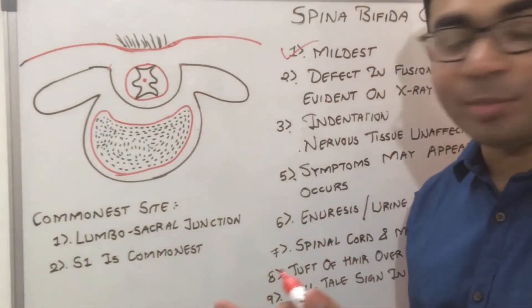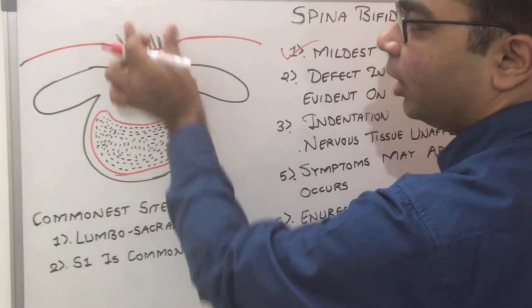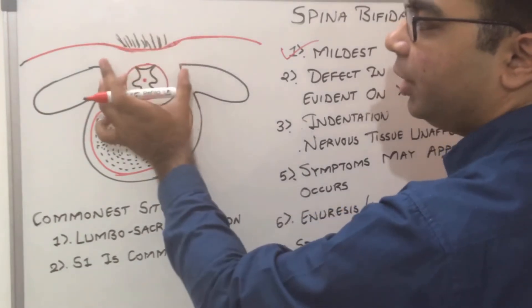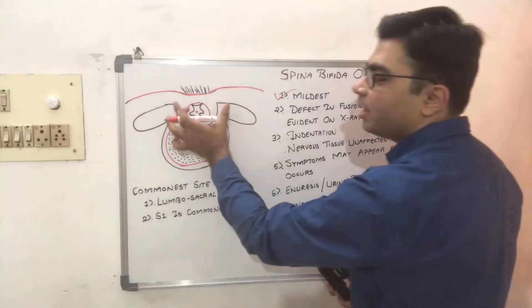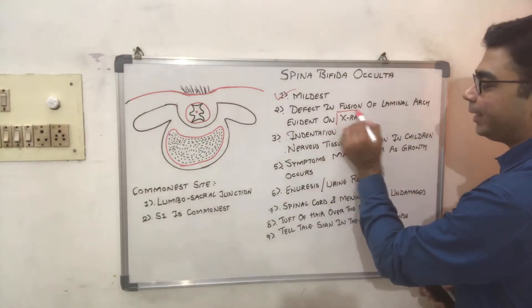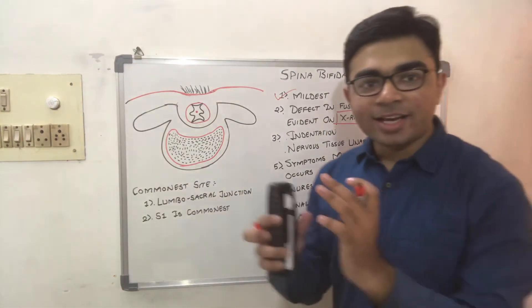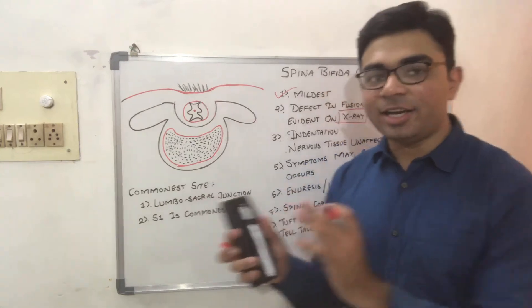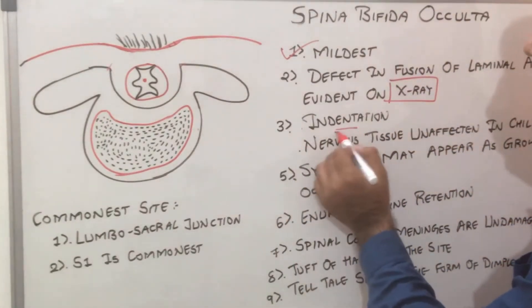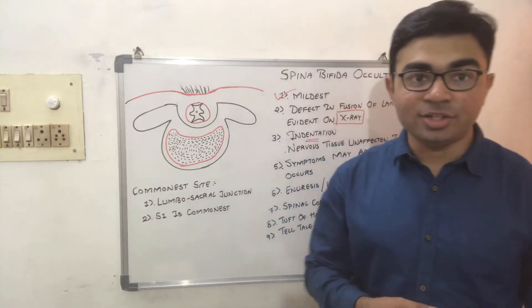In the normal vertebra, the laminae fuse in the posterior direction. In spina bifida occulta, this fusion is defective, which is clearly identifiable on X-ray. Another clinical feature is indentation seen on observation over the site of the lesion.